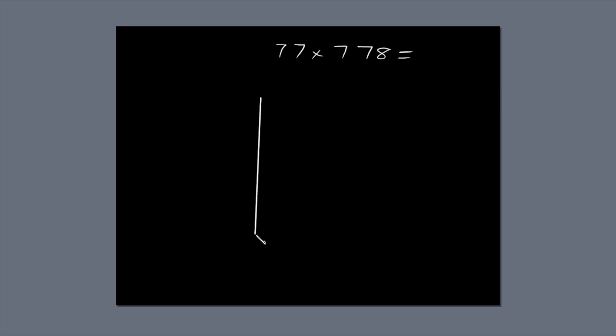The first thing you need to do is draw a box. Subdivide the box into two columns, because the first number, 77, has two digits. You also have to subdivide the box into three rows, because 778 has three digits. You end up with a box subdivided into six smaller boxes.